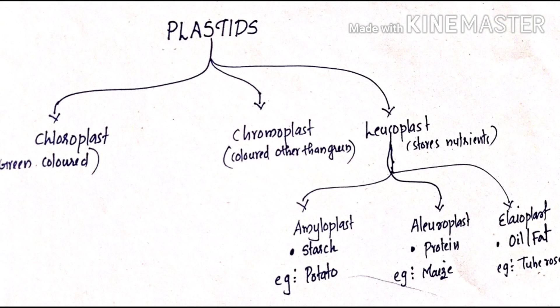Leucoplasts are further divided into three types: amyloplasts, aleuroplasts, and elaioplasts. Amyloplasts store carbohydrates such as starch — example: potatoes. Aleuroplasts store protein — example: maize, where you can see the aleurone layer, a protein-rich layer containing aleuroplasts. Elaioplasts store oil or fat — commonly found in tuberose and castor. Remember: amyloplasts store starch, aleuroplasts store protein, elaioplasts store oil or fat.